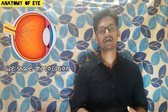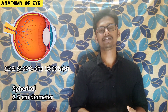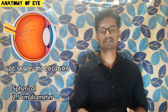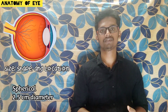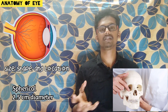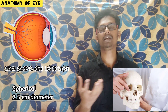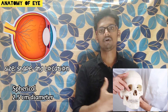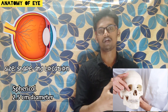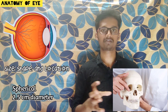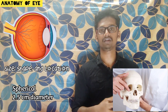The eye is a photoreceptor organ. It is spherical in shape and the diameter is about 2.5 centimeters. Regarding its location, the eye is situated in the orbit of the skull. There are two orbits present on the right and left sides of the skull. In those two orbits, the two eyes fit, and each eye is supplied by the optic nerve, which connects the eyeballs to the nervous system.